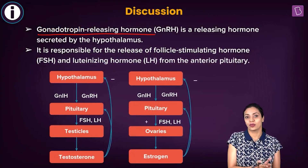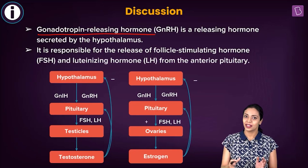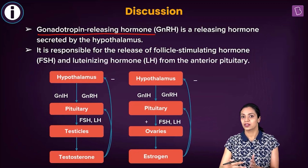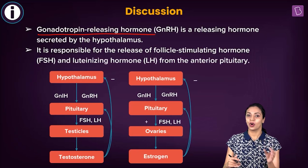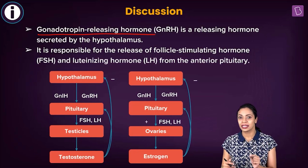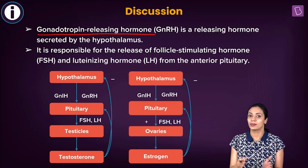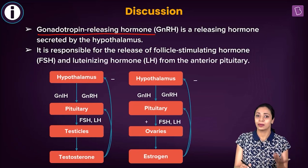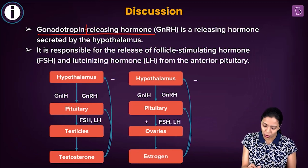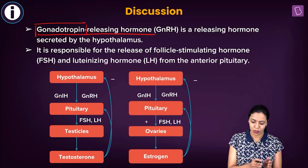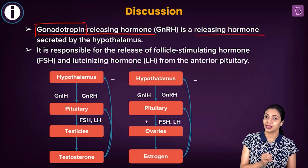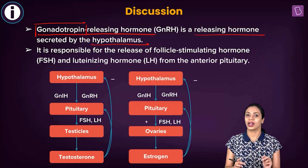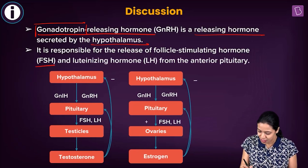In the hypothalamus, two different types of hormones are produced: releasing hormones and inhibiting hormones. Releasing hormones stimulate the anterior pituitary to release certain hormones, whereas inhibitory hormones inhibit the release of certain hormones from the anterior pituitary. GnRH is one type of releasing hormone — gonadotropin releasing hormone — which stimulates the release of gonadotropins from the anterior lobe of the pituitary. It is secreted by the hypothalamus.